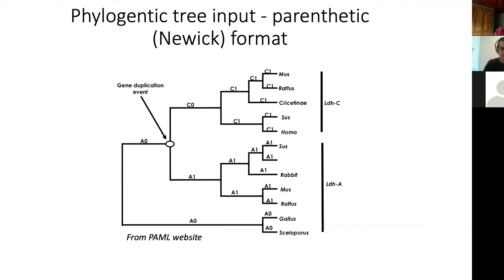Another possible input into CodeML — one which won't be covered in today's demo — is a phylogenetic tree. These trees are typically provided in Newick format. If you provide both a sequence file and a phylogenetic tree, that offers a very powerful approach and PAML can run a lot of cool tests with that. I haven't perfected that part of the pipeline yet, but I hope to, and I'll offer tutorials on that as well.